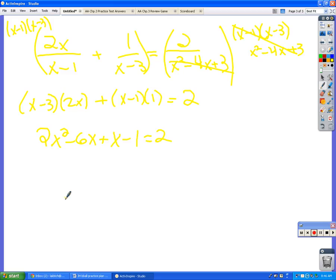Now what? Combine like terms. So there's no other x squared. How many x's do I have? Minus 5x. 2x squared minus 5x minus 3 equals 0.